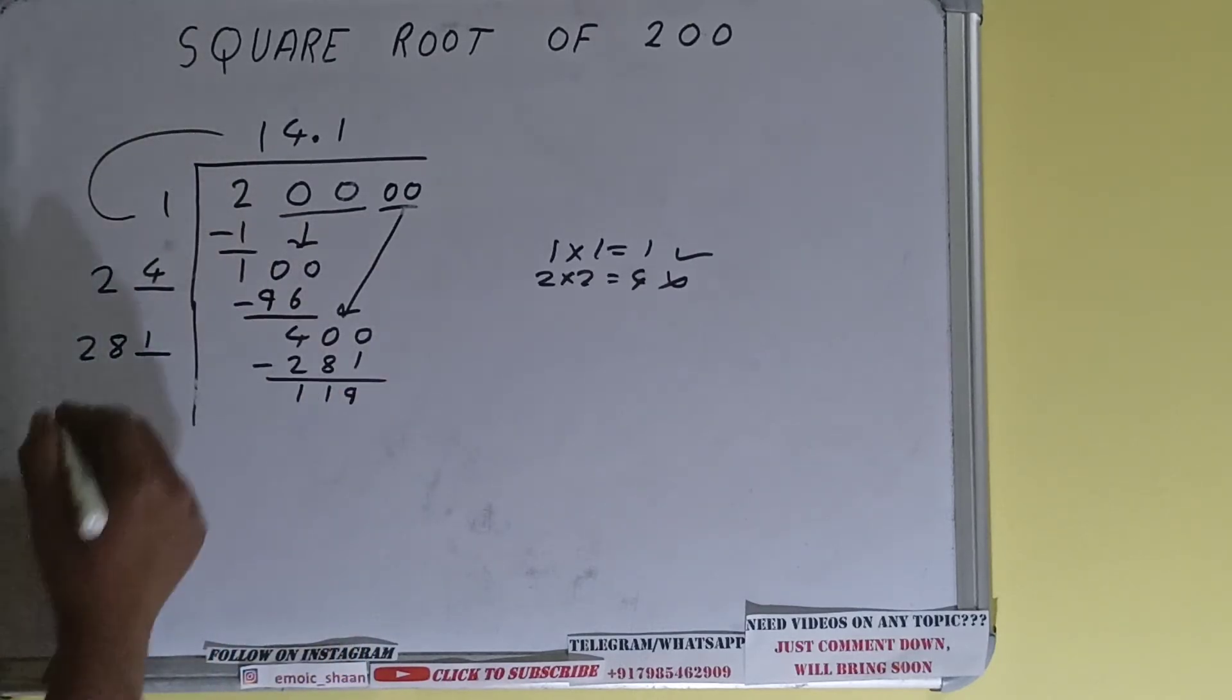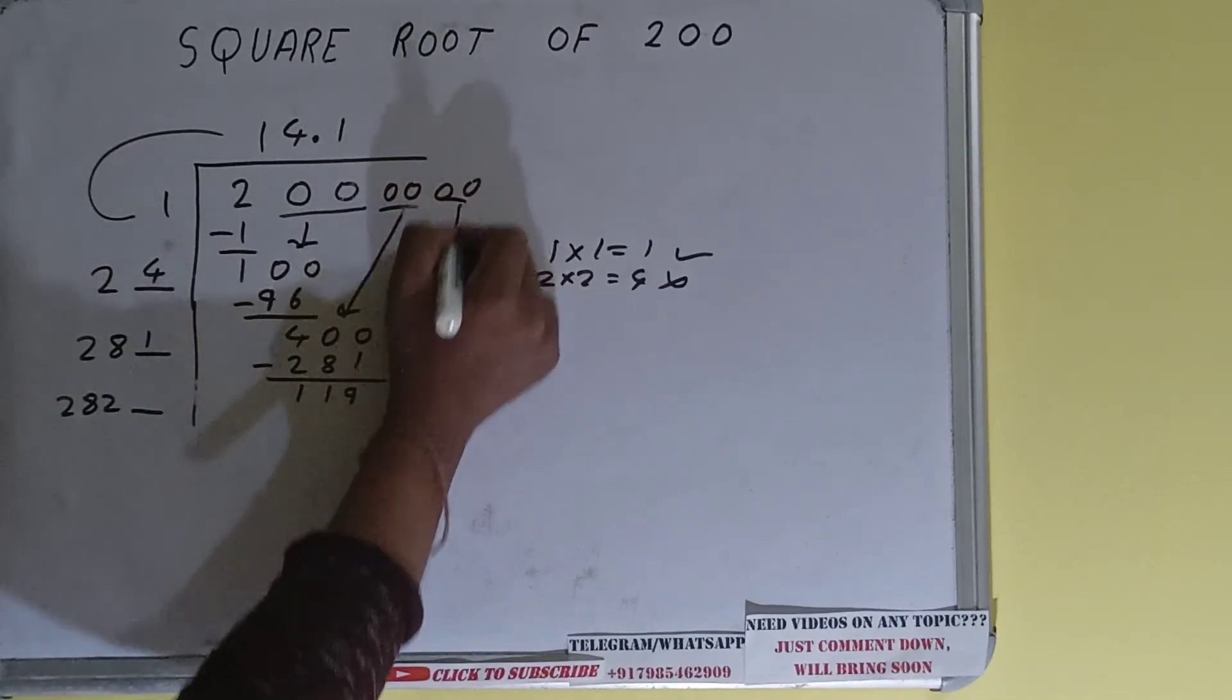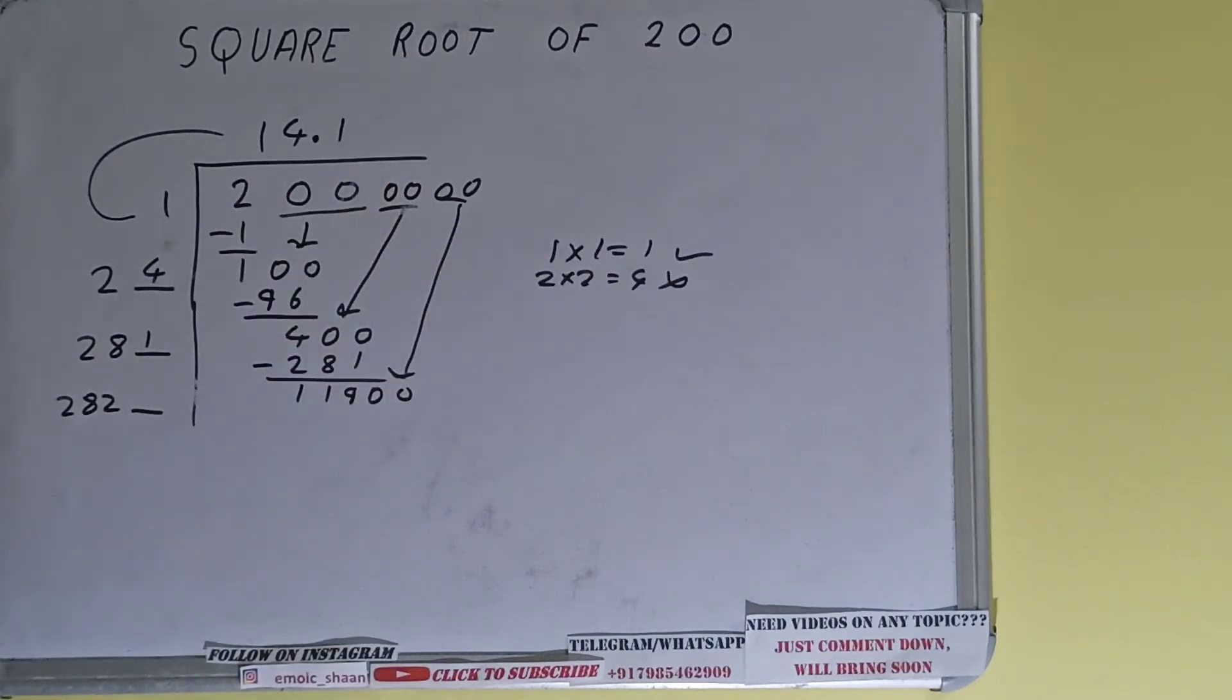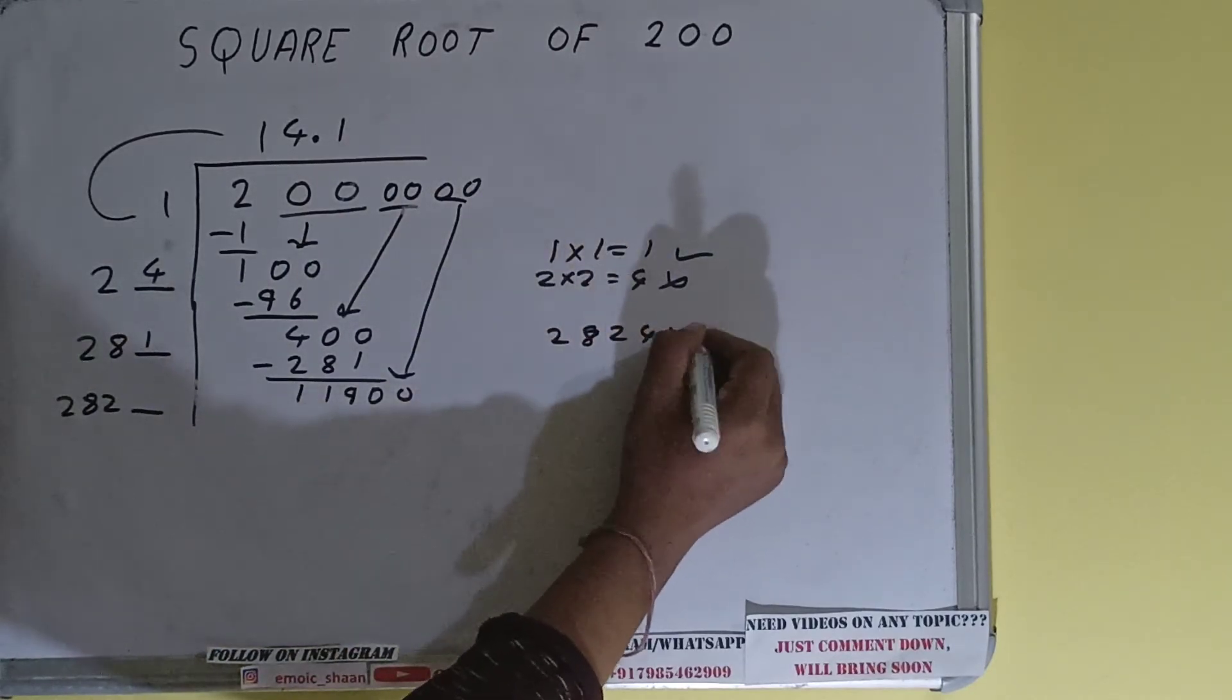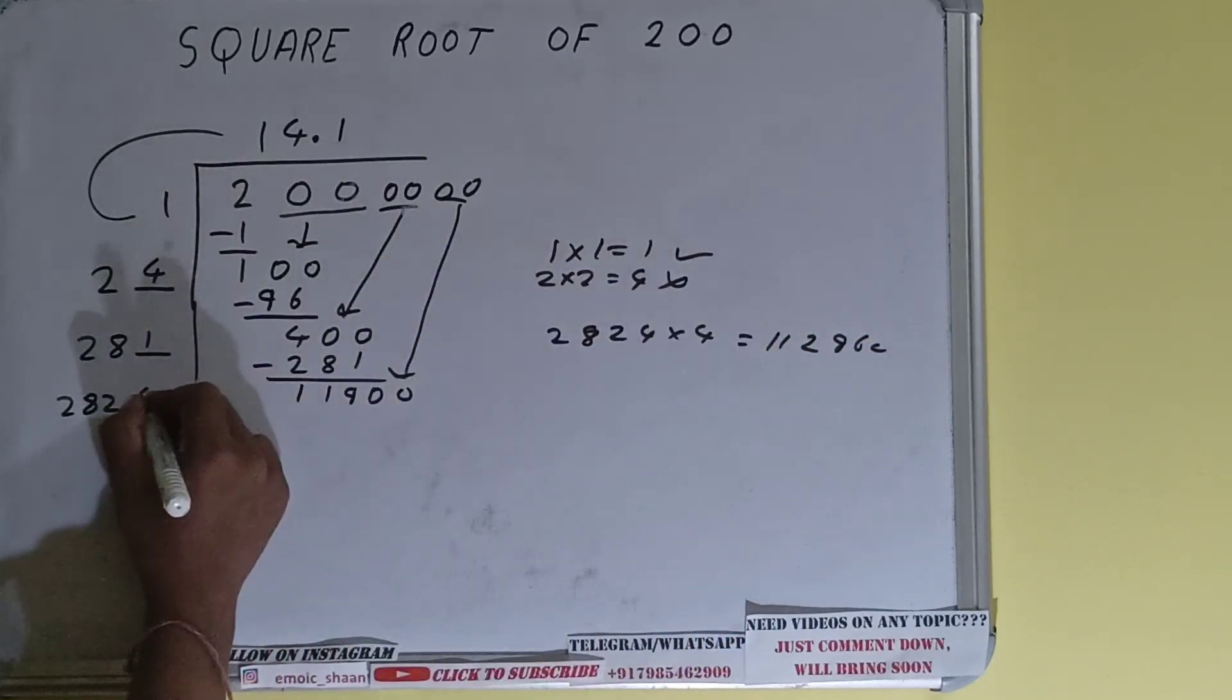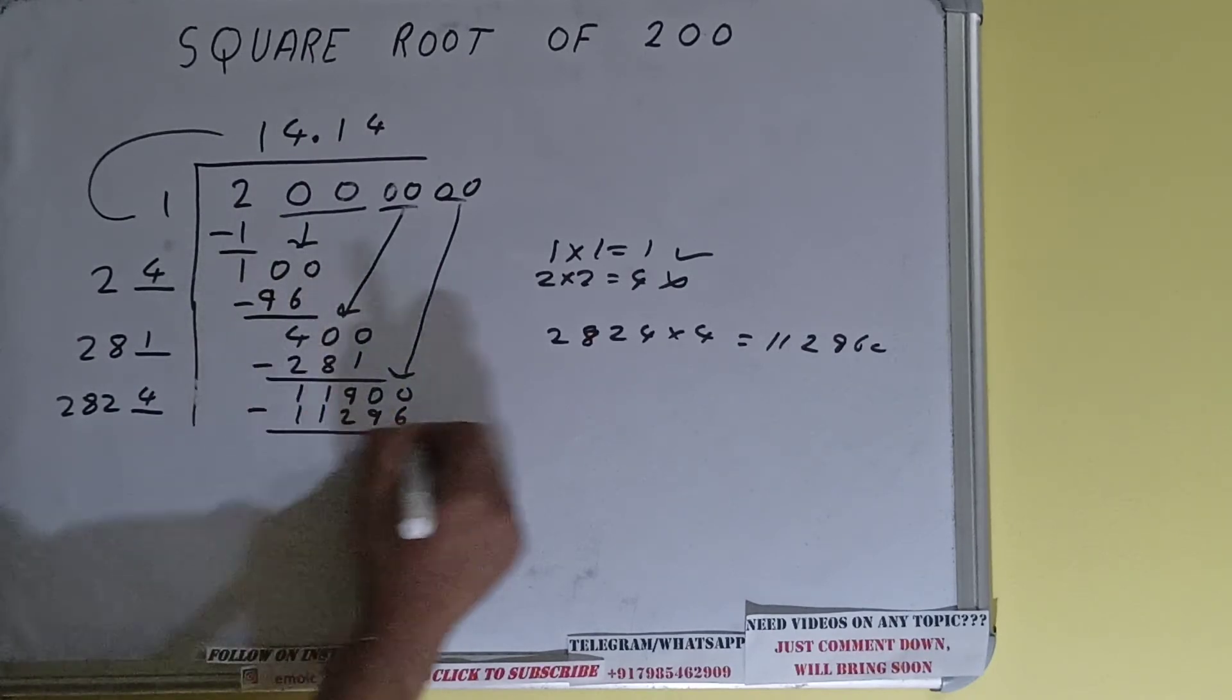Now 281 into one we did, right? So add both. 281 plus one will be 282 and one extra over here. Bring one more pair of zeros down and the number will become 11,900. Now we can try four times. 2824 times 4 will give 11,296, which is all right. So four here and four here, 11,296. Subtract it.